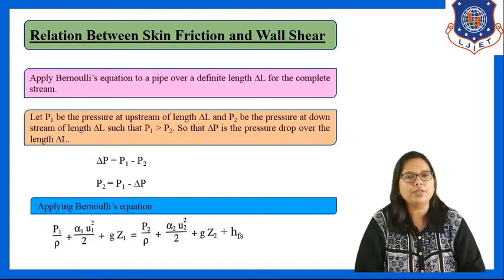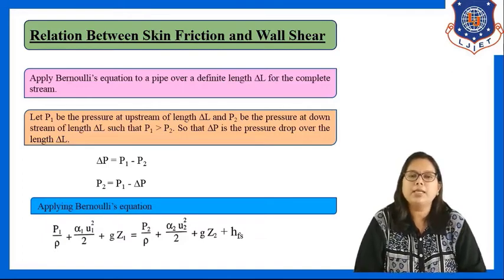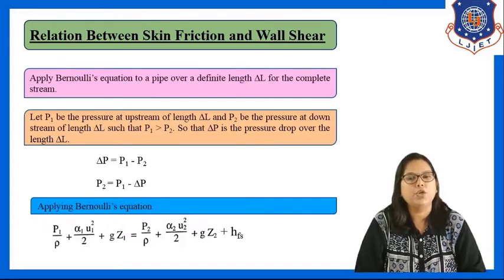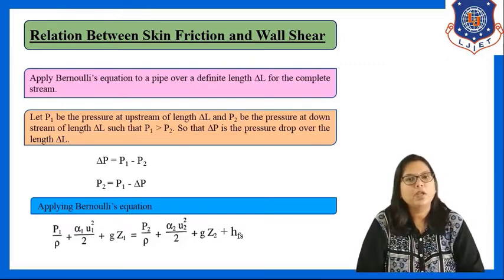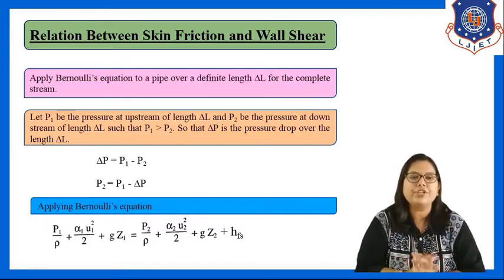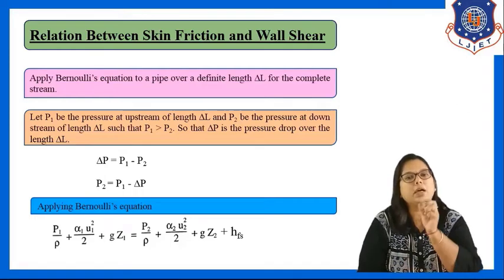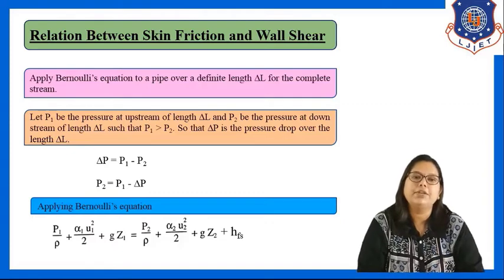Bernoulli's equation: P1/rho + alpha1*u1²/2 + G*z1 = P2/rho + alpha2*u2²/2 + G*z2 + Hfs. Here Hfs is the skin friction. Generally for friction loss we use the term Hf, but Hfs specifically denotes the skin friction.